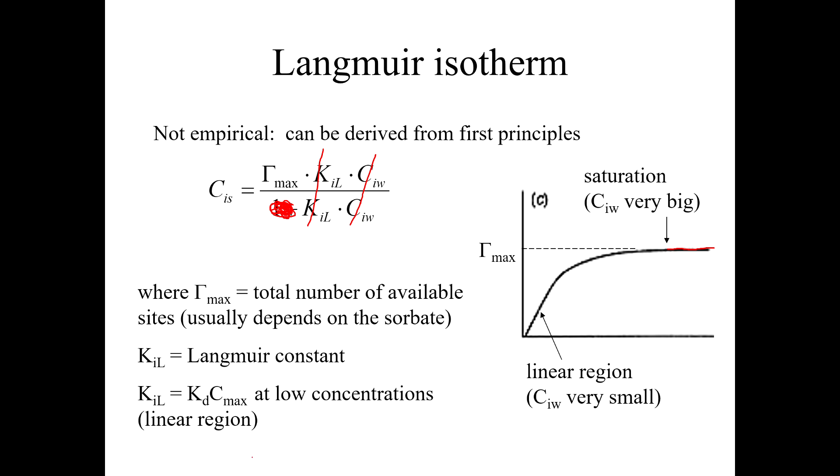So, again, KL is not the same thing as KD. It's what we call the Langmuir constant. At low concentrations, KL would be equal to KD times C max. If you're really hung up on this idea of KD and you want to understand how it relates to KL, this is how it does. Not that it matters. But the way that you interpret this, if your data fits this kind of isotherm, the way you interpret it is that there's a limited number of available sites and they all have the same energy. So it just populates all those sites and then when those sites are full, game over, there's nowhere to go.